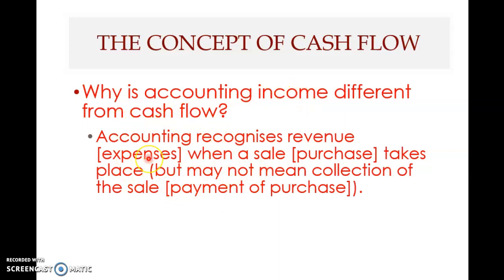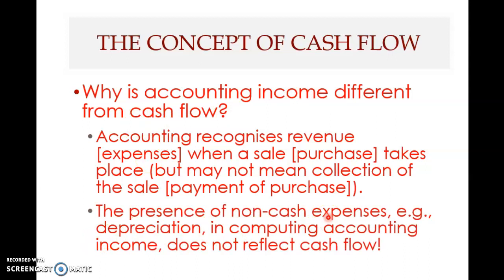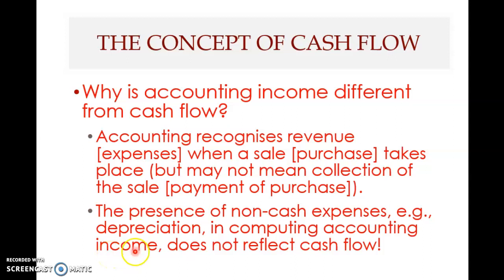The second difference between accounting income and cash flow is the presence of non-cash expenses — for example, depreciation — in computing accounting income, which does not reflect cash flow. Depreciation is a non-cash expense because it is the apportioning of the cost of fixed assets divided across the years in which the assets are used to generate income. Therefore, depreciation does not reflect a cash outflow. It is an expense in accounting terms, but it does not represent an actual cash payment.